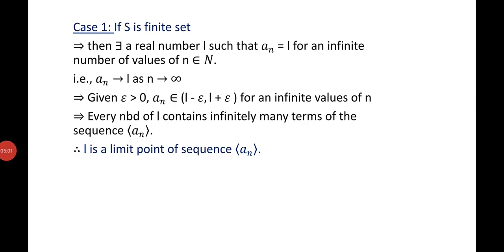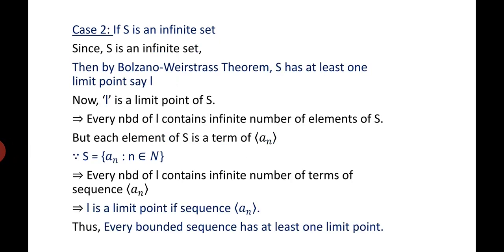In Case 2, if S is an infinite set, then by the Bolzano-Weierstrass theorem, S has at least one limit point, say L. Since L is a limit point of S, every neighborhood of L contains infinitely many elements of S. But each element of S is a term of the sequence A_N, since S = {A_N : N ∈ ℕ}. This implies every neighborhood of L contains infinitely many terms of A_N, which implies L is a limit point of A_N.